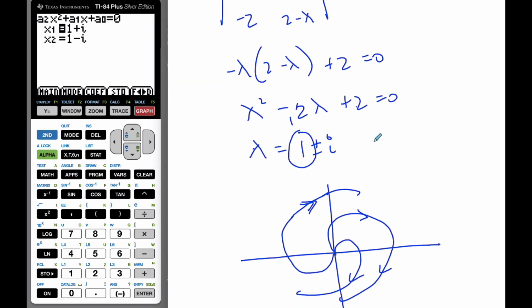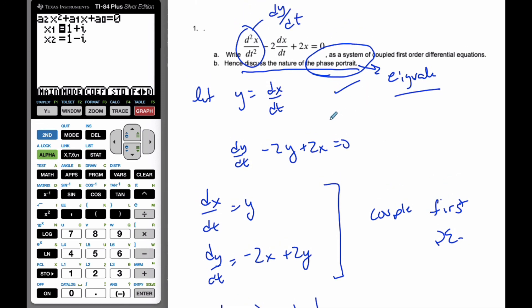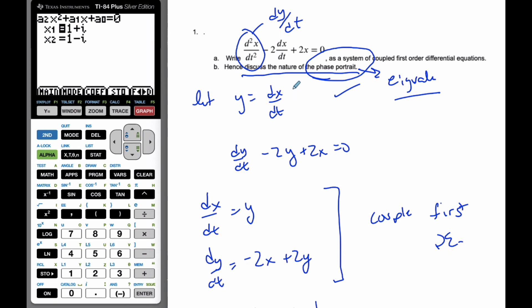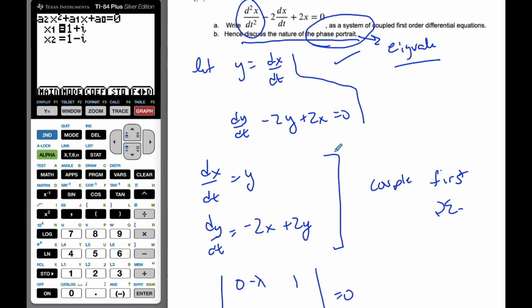And so our, it is unstable, it's going outwards, and it is an unstable spiral. And so that is our nature of the roots and the phase portrait. And our technique of a substitution is how we can solve second order differential equations.